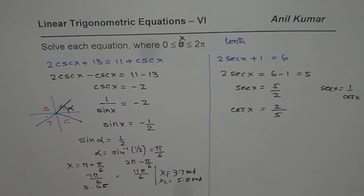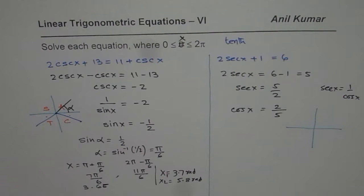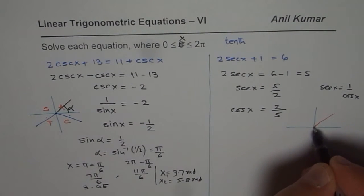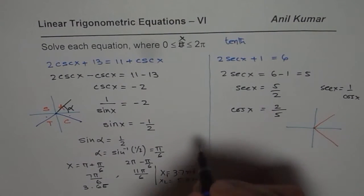Now cos(x) is positive, that means we are looking into two solutions. One of them should be in quadrant 1, the other one in quadrant 4.